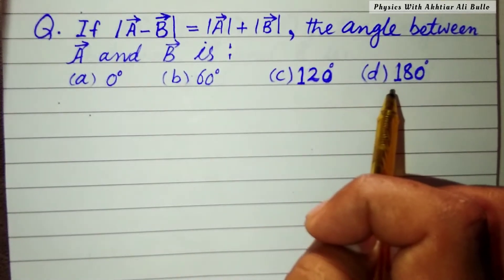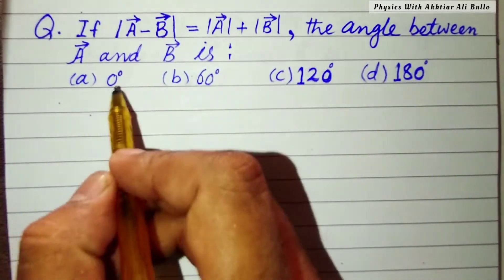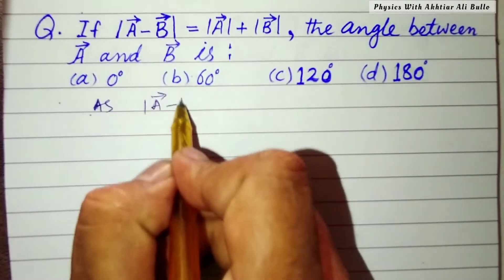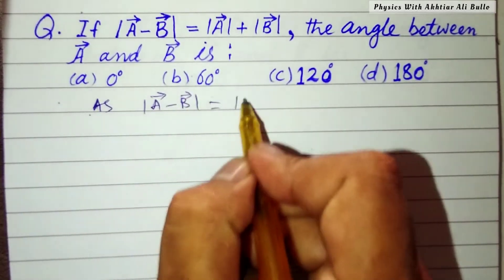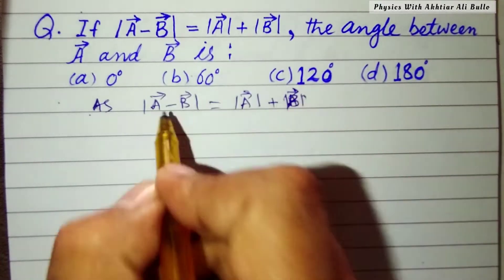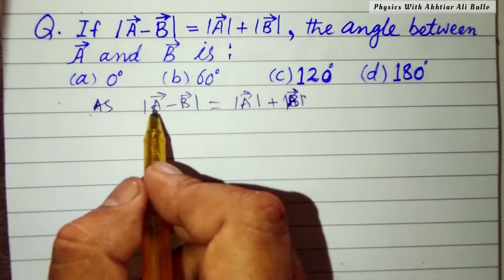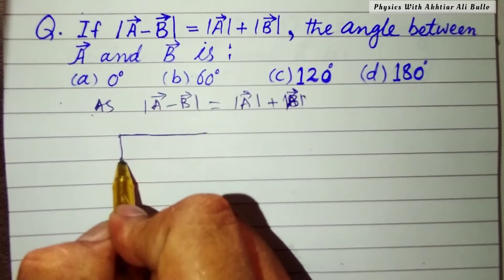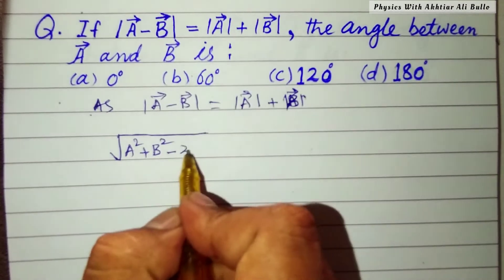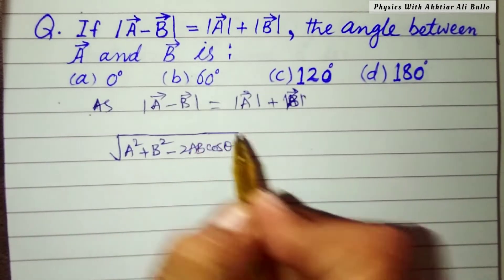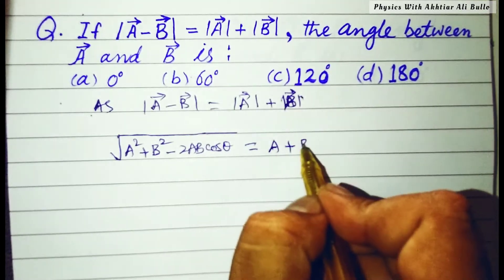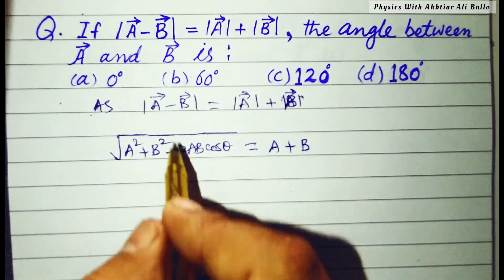So the magnitude of vector a minus vector b is equal to the magnitude of vector a plus the magnitude of vector b. We can write the magnitude of a as 'a' and magnitude of b as 'b'. To remove the square roots, we square both sides.